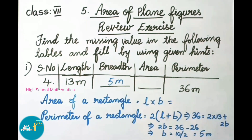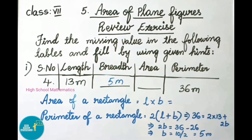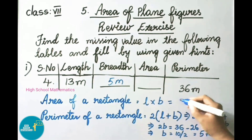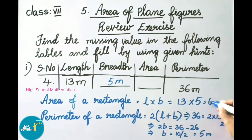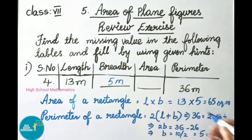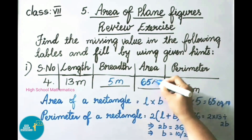We have length 13 meters and breadth 5 meters. Area of rectangle = length × breadth = 13 × 5 = 65 square meters. Let us write 65 square meters in the blank.